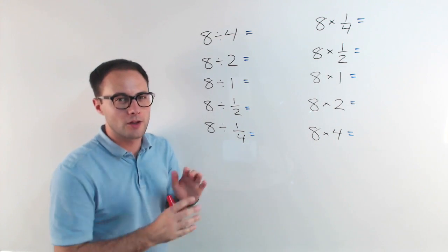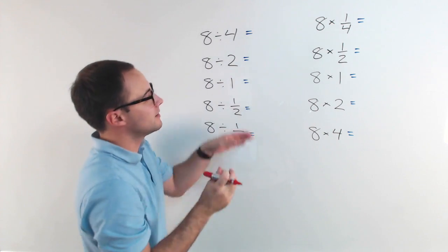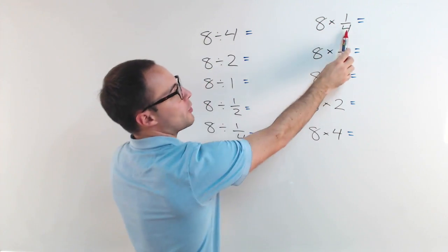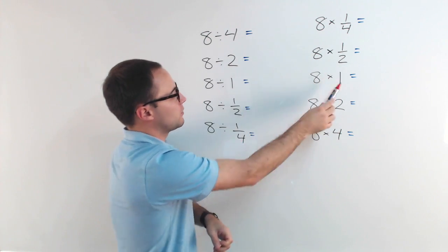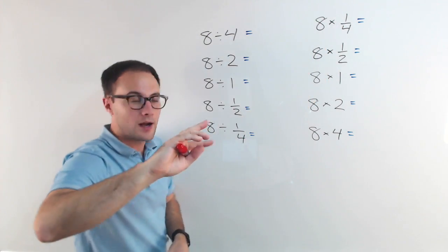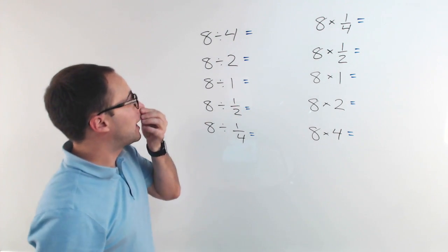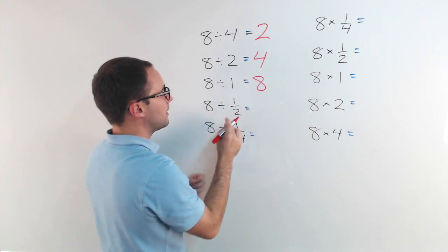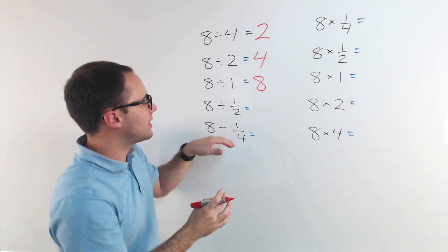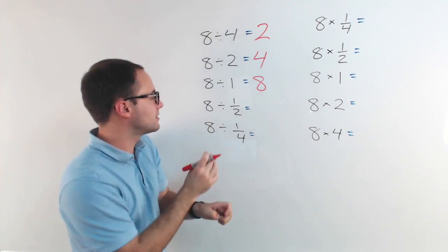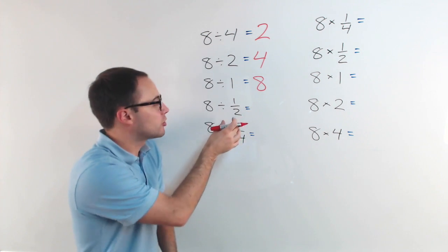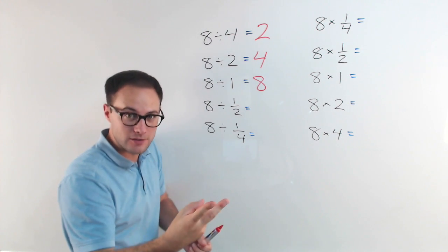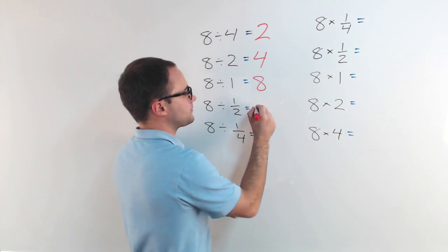Let's see if we can explain dividing with fractions a little bit more. We've got division on this side in this column, and multiplication on this side. Notice we always start with an eight in both columns. We're dividing by four versus multiplying by one-fourth; dividing by two versus multiplying by one-half; one and one; one-half and two. So you can notice the divisor gets flipped upside down. Eight divided by four is two. Eight divided by two is four. Eight divided by one is eight. Now the tricky part — if I've got eight chocolate bars and I'm putting them in groups of one-half, in the first bar I'd have two halves, in the second another two, and so on — so I'd end up getting 16. And what if I divided into groups of one-fourth? The first bar would have four groups of one-fourth, then another four, another four, another four — you end up with 32 groups of one-fourth.